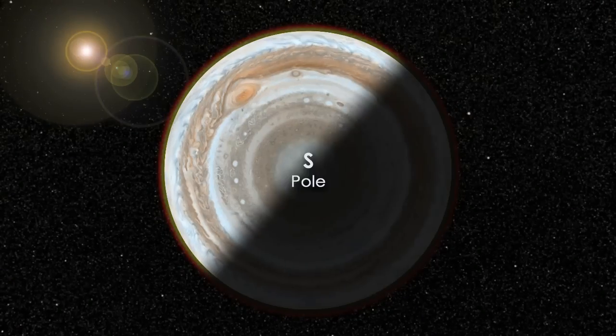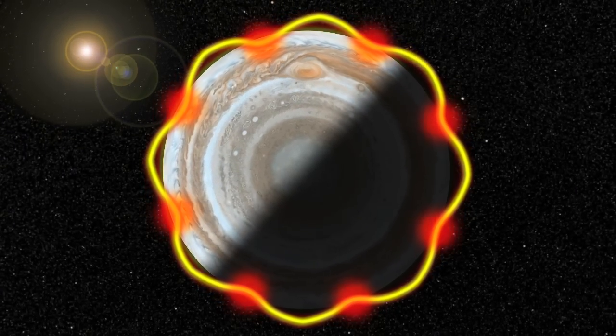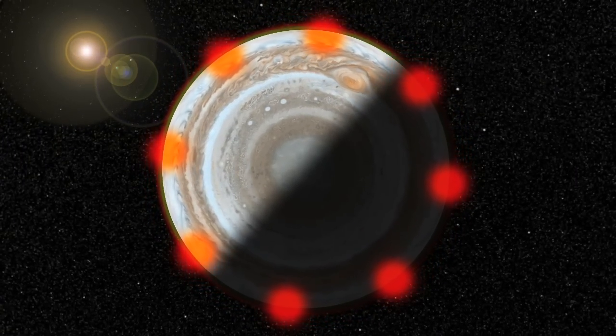So at any given time, there are approximately eight to ten hotspots in Jupiter's atmosphere that are spaced roughly evenly apart from one another. We believe that each of the downward portions of this Rossby wave corresponds to the hotspots that we see on Jupiter.